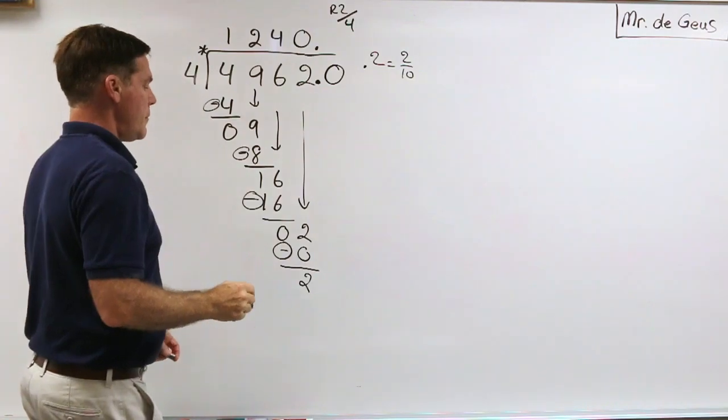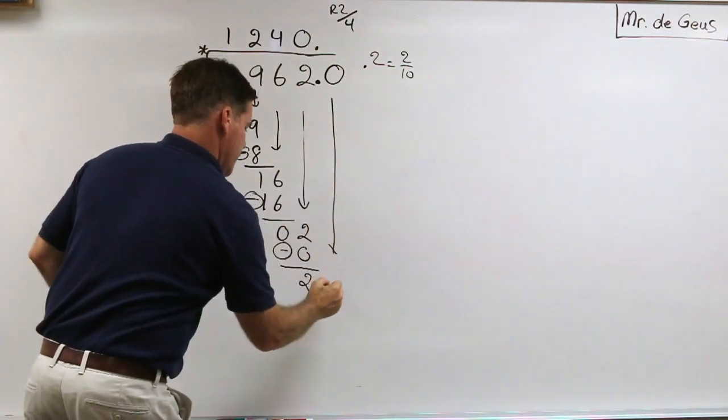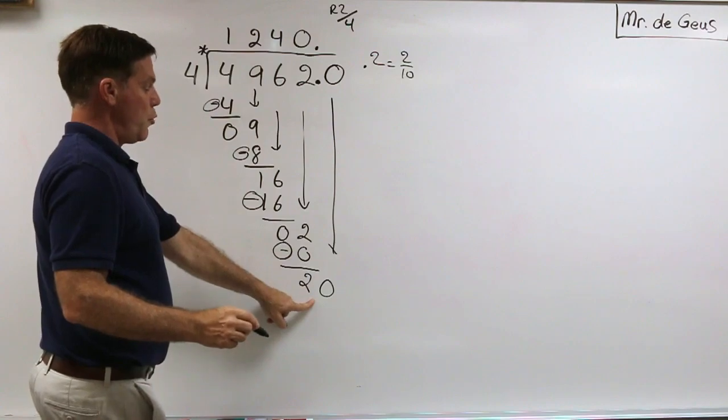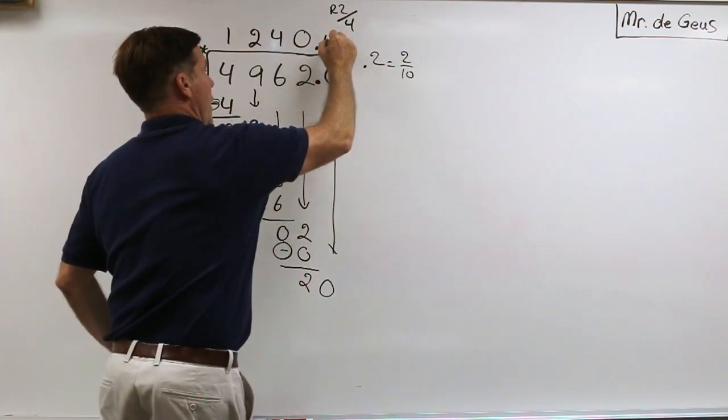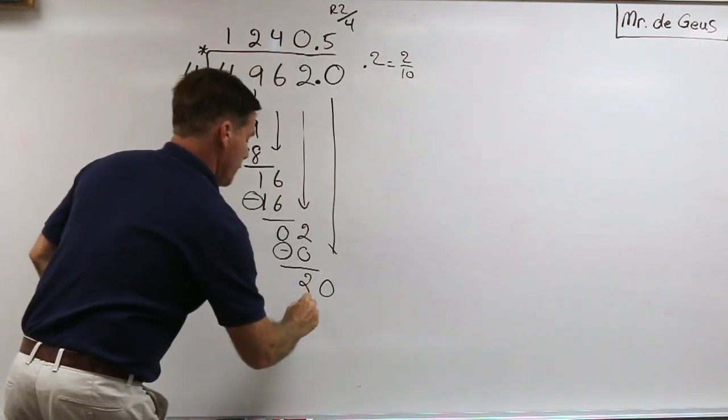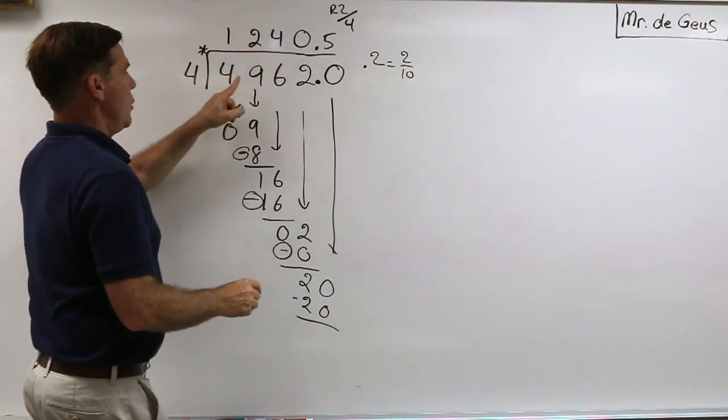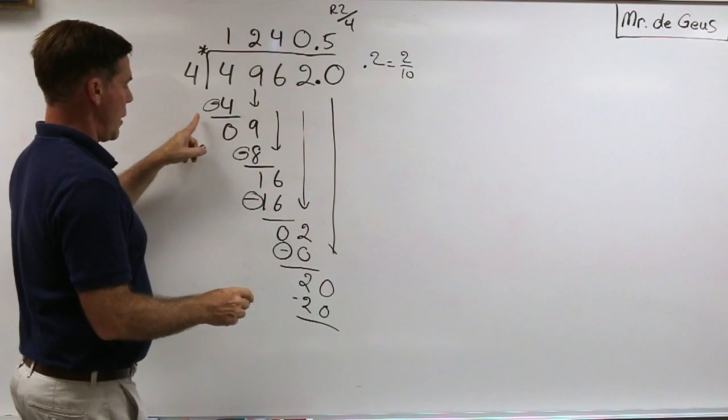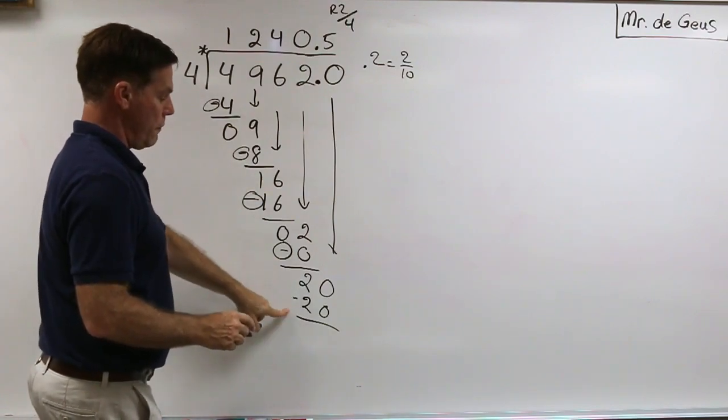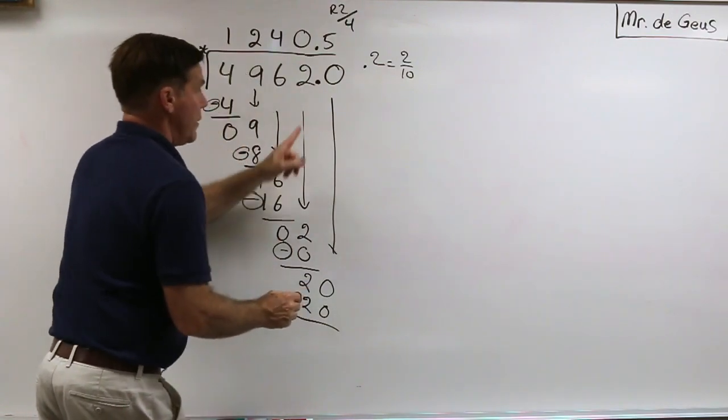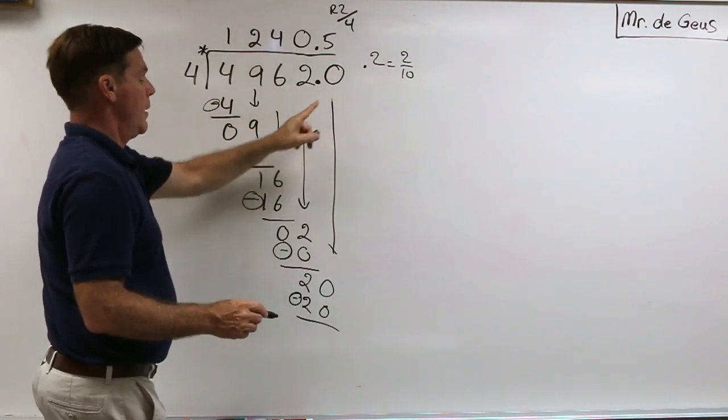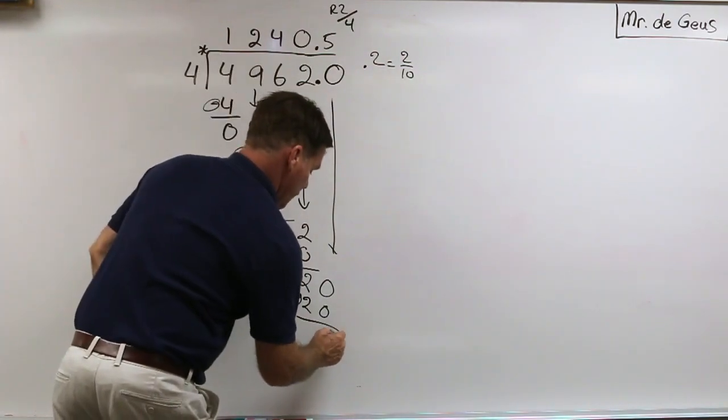So I can go ahead and bring that zero down. Now 4 goes into 20 five times. 4 times 5 is 20. And notice now I have 1, 2, 3, 4, 5, so I subtracted 1, 2, 3, 4, 5 times because I added that decimal there. 20 minus 20 is zero and then I am completely done.